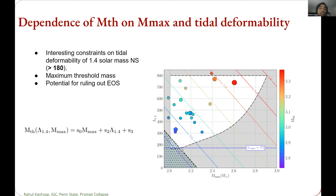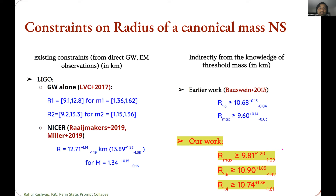With the GW170817 observations, our work on the lower bound of R_max is greatly improved. Our errors are larger because we account for uncertainties in the gravitational wave event as well as the fitting slopes. By observing different events, we can constrain the radius of the maximum-mass neutron star and also the radii of 1.4 and 1.6 solar mass neutron stars through different correlations. We are also looking into gravitational wave data analysis that constrains neutron star radii using only gravitational wave data.